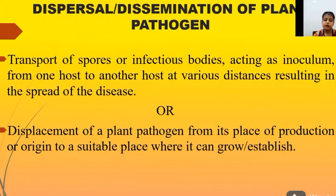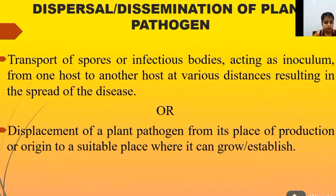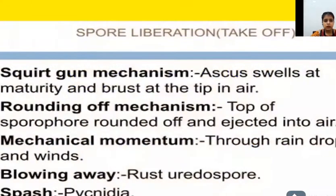Pathogens disperse to cause disease from one host to another at various distances. They can travel through wind, water, and insects. Pathogens travel from one place to another for good establishment of disease. Next is spore liberation — how they can travel from one place to another.